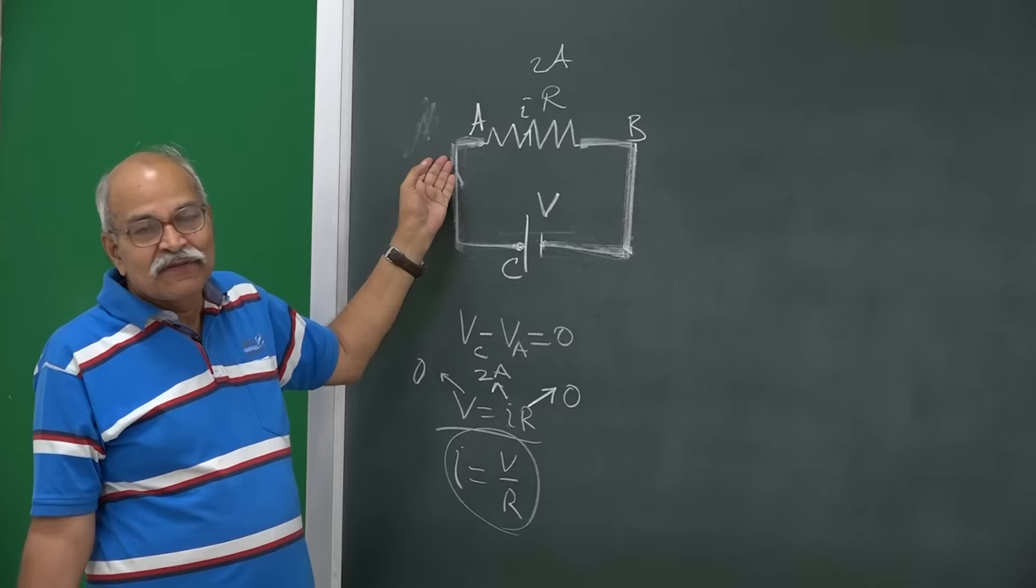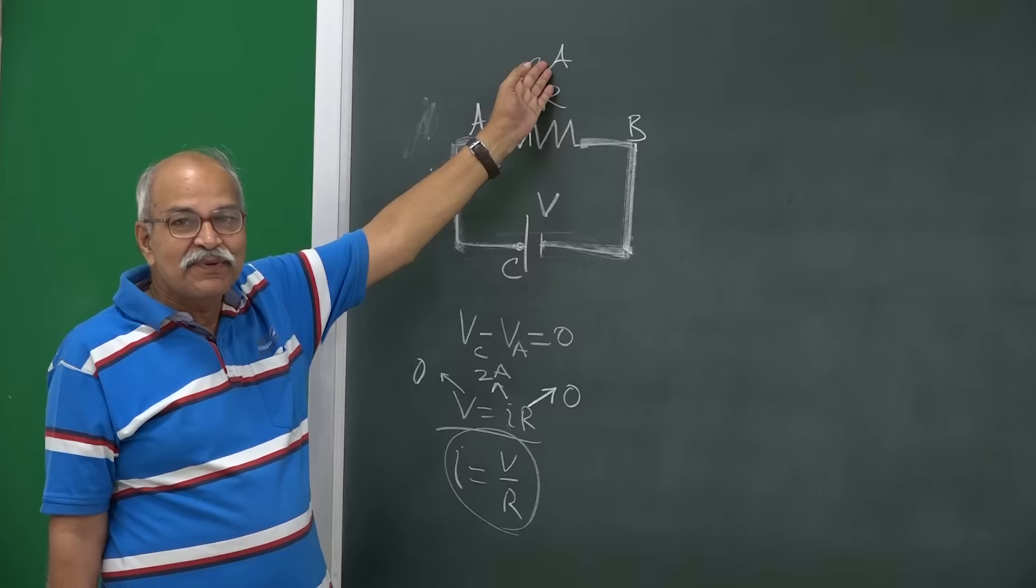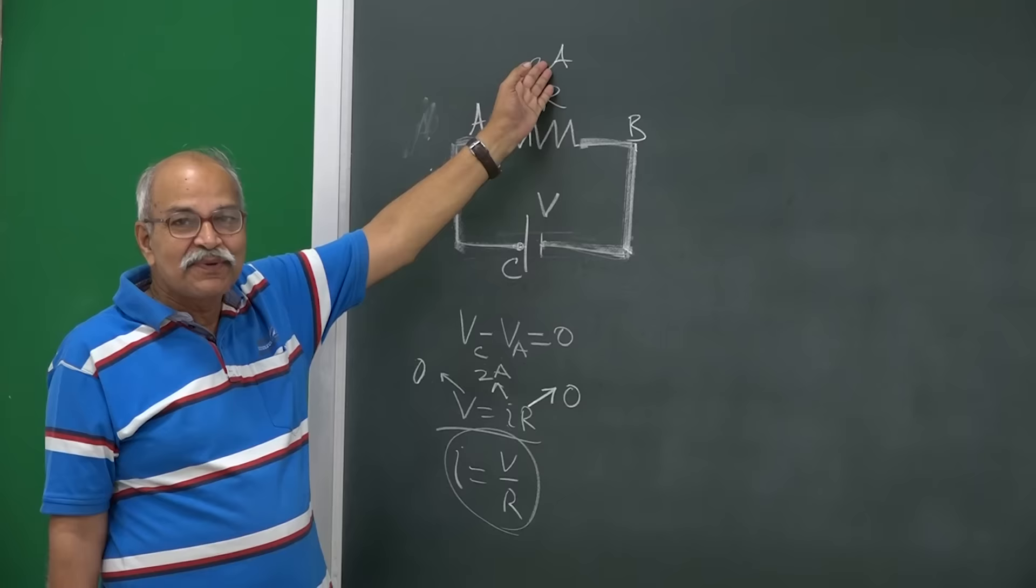this 2 amperes becomes 1 ampere or 0.5 amperes or 1.5 amperes, does not matter, even then this equation will be okay. It is perfectly logical and it is in accordance with Ohm's law.